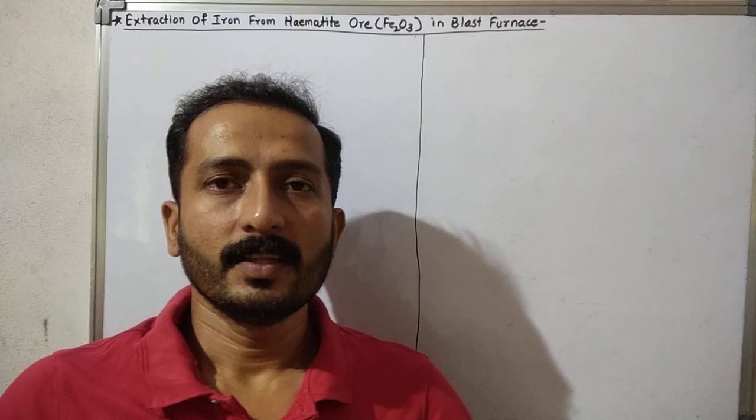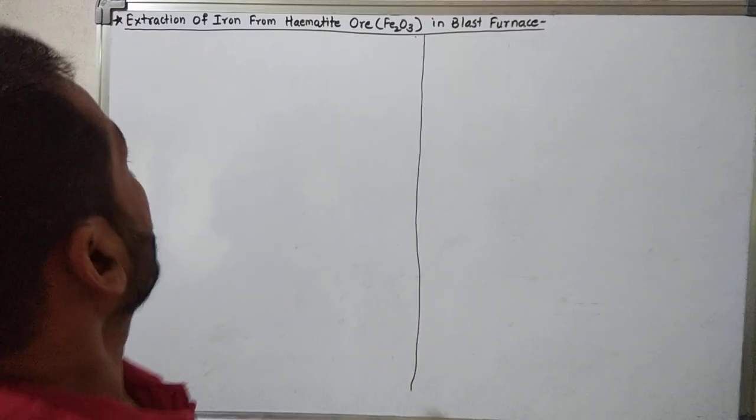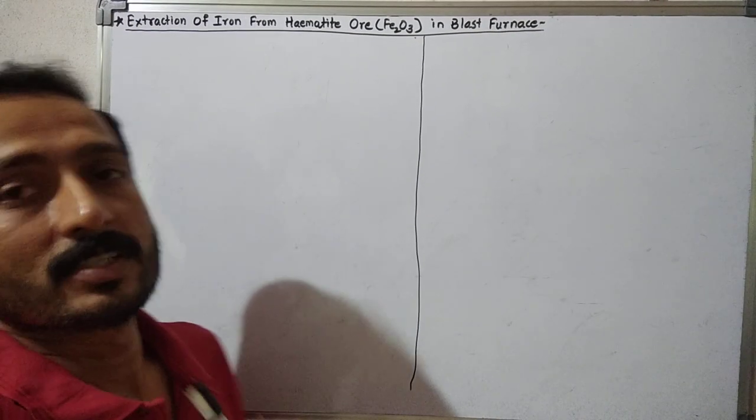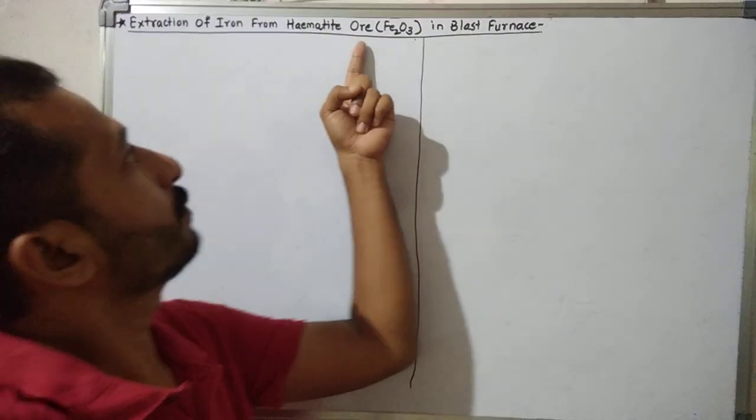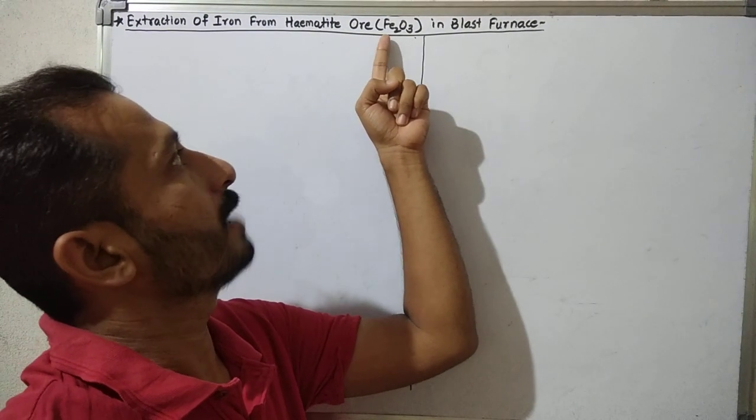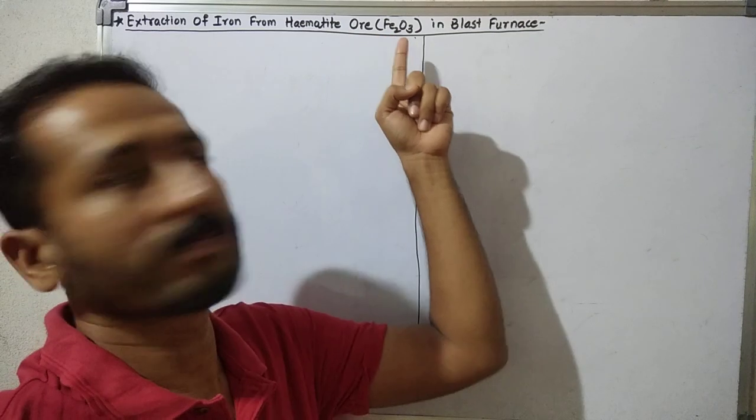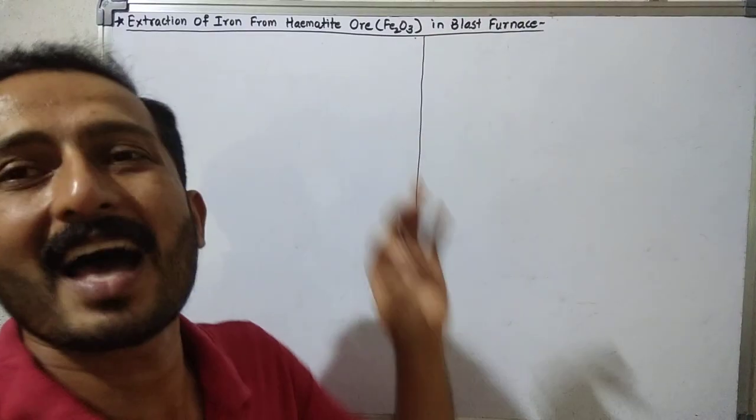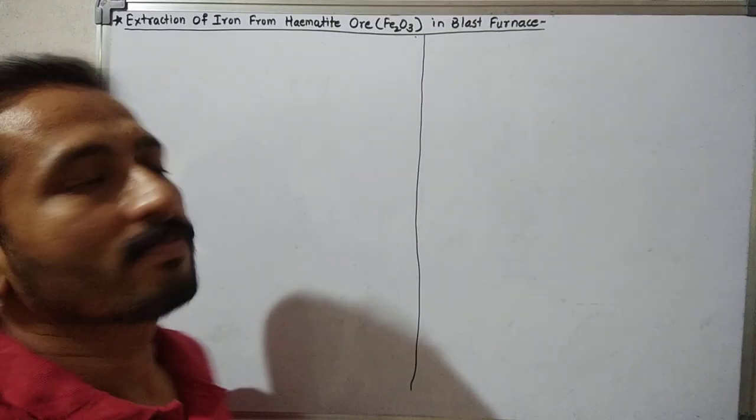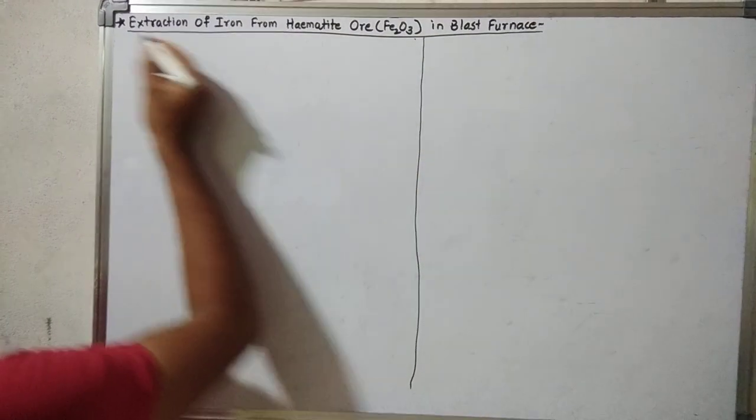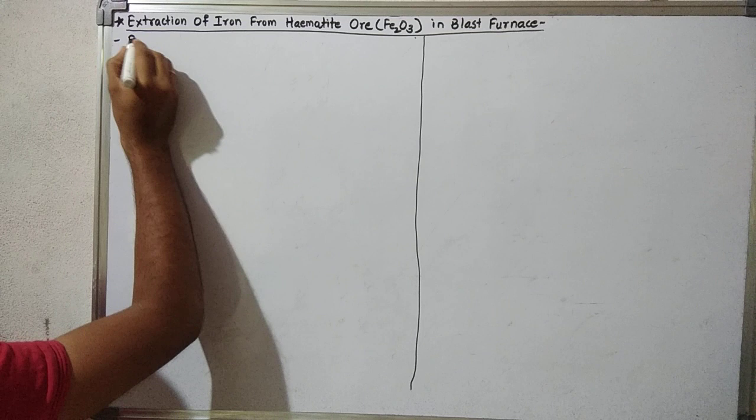Hello dear students, in this video we shall discuss a very important extraction, that is the extraction of iron from hematite ore. Hematite ore has the formula Fe2O3, and this extraction is carried out in a blast furnace.